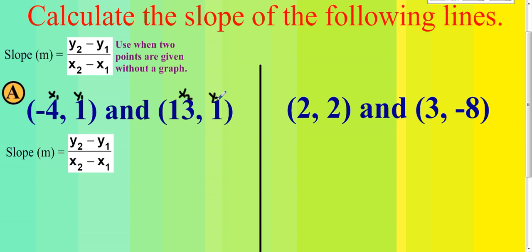Now you're ready to go. We have x1, y1, x2, y2 — notice the ones stay together and the twos stay together. Because we don't have a graph, we're not going to use rise over run. We have the slope formula: y2 minus y1 over x2 minus x1.